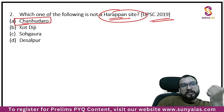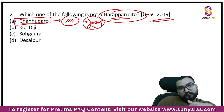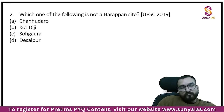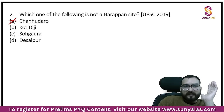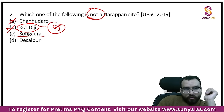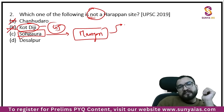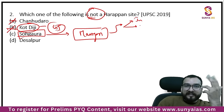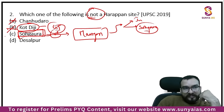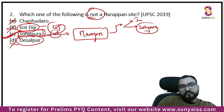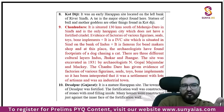In the 2019 Prelims, again a site-based question: Chanhu-Daro. You should know about Chanhu-Daro that it is a citadel-less city — there are no citadels. It is basically the factory area where all tools, weapons, and agricultural tools were made. Sohgaura you understand in the Mauryan context — I told you there are inscriptions related to Mauryans, including the Junagadh inscription and Sohgaura. By Sohgaura, you should know this is a Mauryan site in UP — it is not a Harappan site. Desalpur is a Harappan site in Gujarat. So you have to add information for Chanhu-Daro, Kot Diji, and Desalpur.